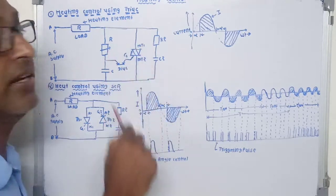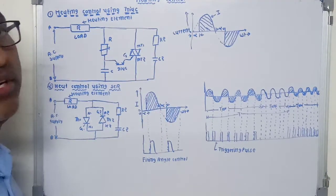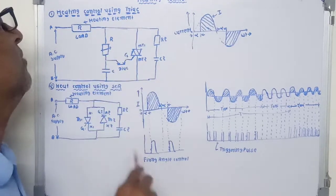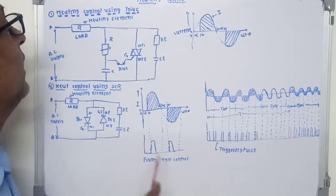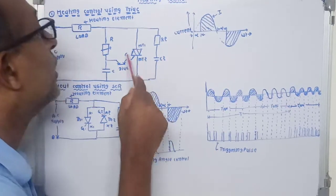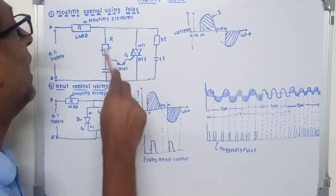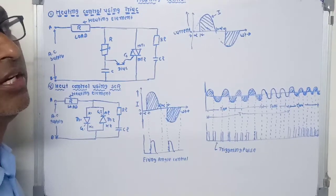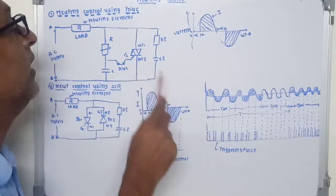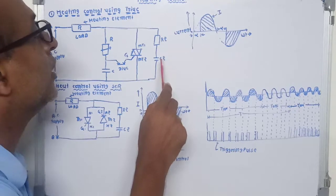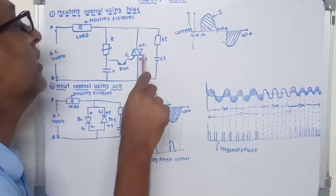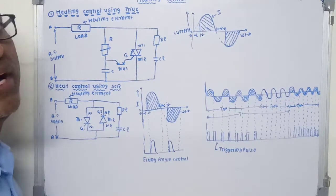Thus heating control can be achieved. Here R is the heating element, which works as the load, and the DIAC and TRIAC are connected as shown in the figure. R and C form the phase control circuit, or gate control circuit, for the TRIAC. The resistance R2 and C2 form a snubber circuit connected in parallel with the TRIAC.